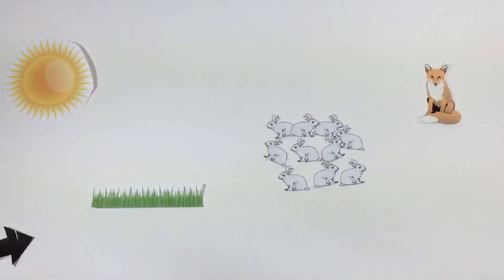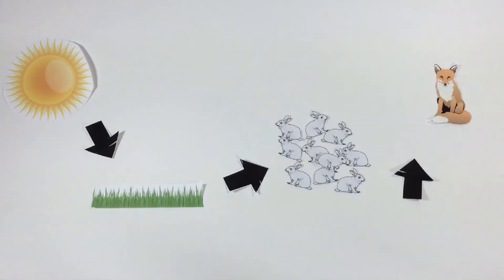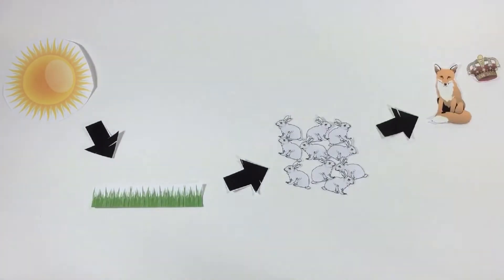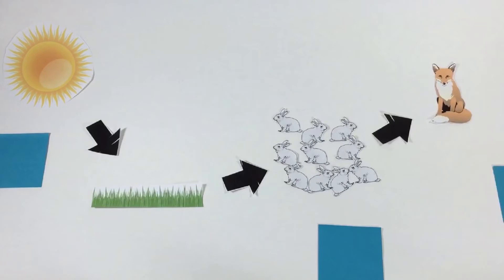The energy from the sun feeds the grass. The rabbits eat the grass and multiply and the foxes eat the rabbits. Each step is another level in the food chain. You might think foxes are on top but just wait.